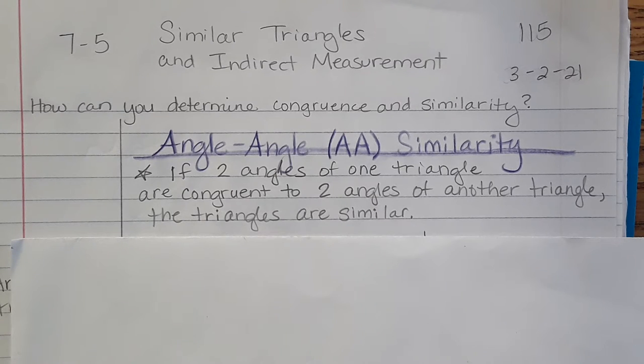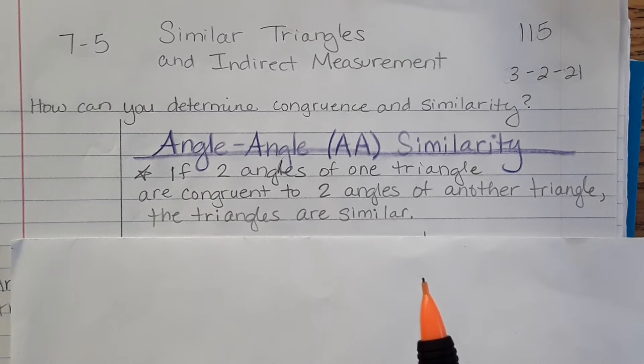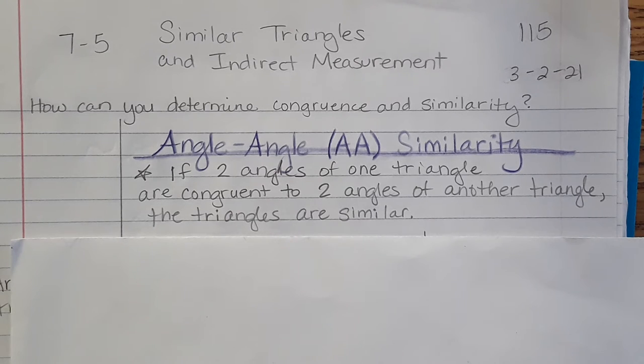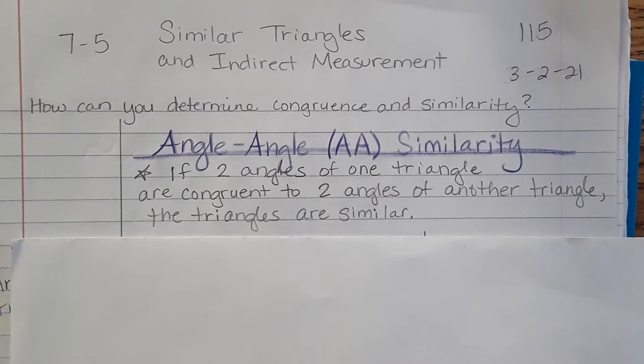So if you think about this, it makes sense because if two angles of one triangle are the same as two of the other, well then the third has to be the same too. Because if you have only three angles at 180 degrees, two are the same, two are the same, the third has to also be the same.